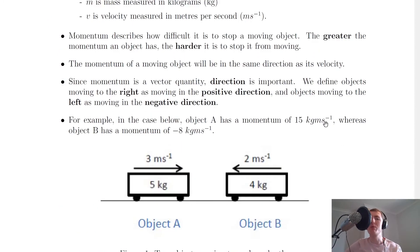In more general terms, momentum is linked with something called inertia, and this describes how difficult it is to stop a moving object, or how difficult it is to start moving a stationary object. The greater the momentum an object has, the harder it is to stop it from moving.